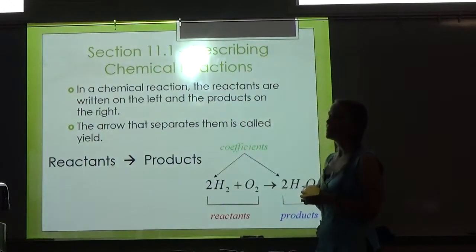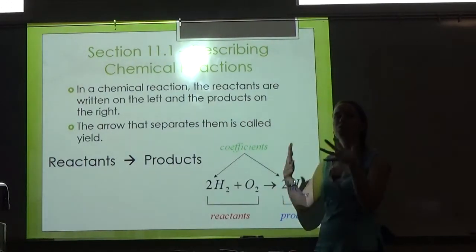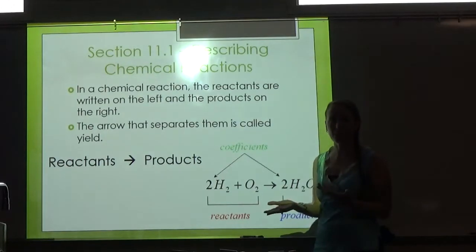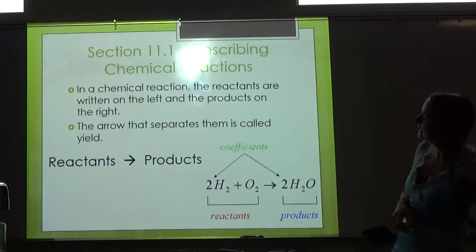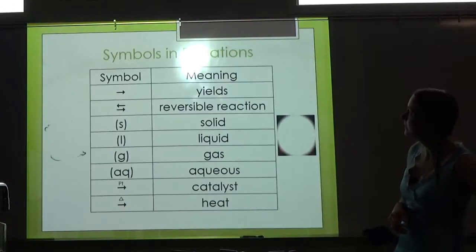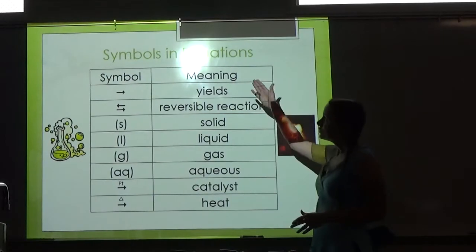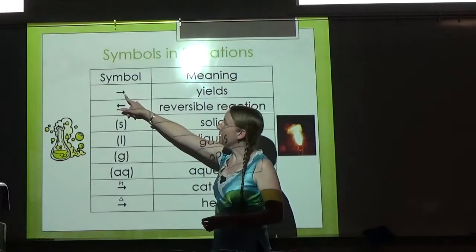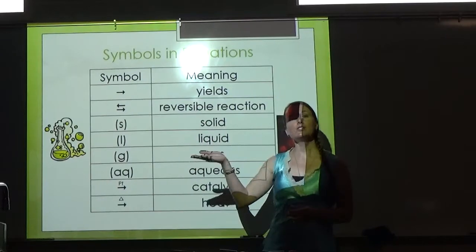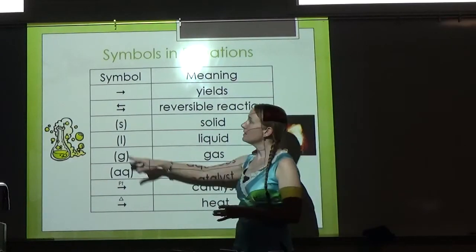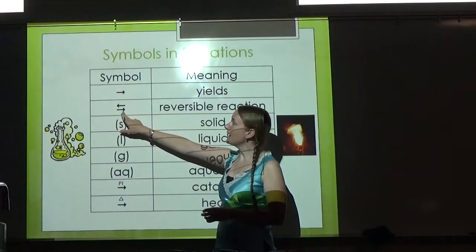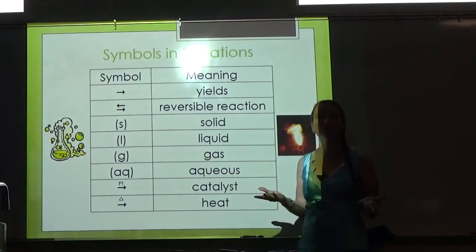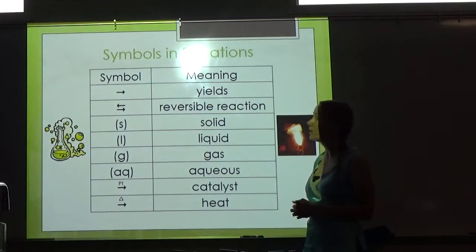What we're going to learn in this video is how to write reactions, and then in the second part of this video, we'll learn how to balance equations. Some things you'll see in reactions: you'll see the yield sign—that means it yields, or that's pointing to the products. Sometimes you will see a double arrow, which is a reversible reaction, and eventually you'll learn about something called equilibrium.